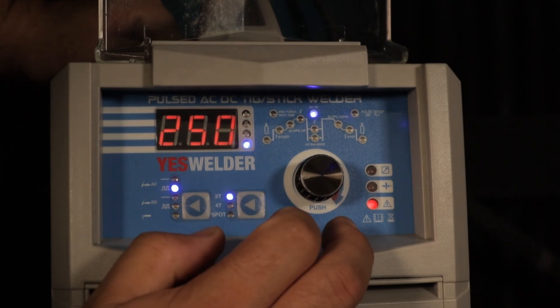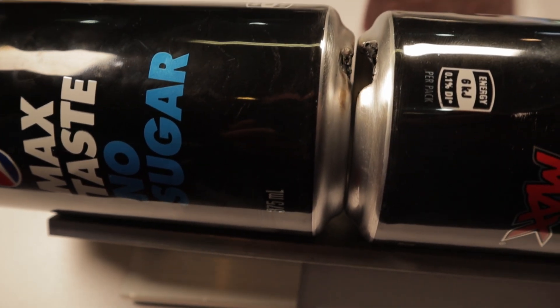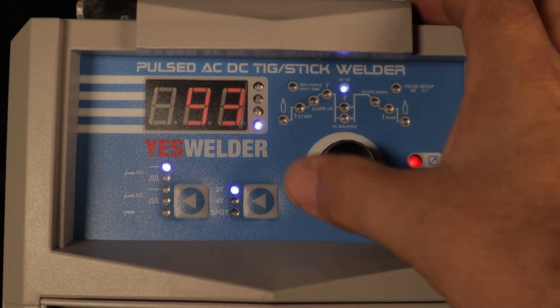The next setting is AC frequency. The switch from AC to DC. For thinner material, I lean towards a higher frequency. First, it will reduce the amount of penetration. The second reason, it will narrow the width of the arc, resulting in a smaller weld pool. I'll be running 250 hertz.